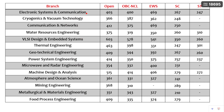Other branches are also available: Electronic Systems and Communications, Cryogenics and Vacuum Technology, Communication and Networks, Water Resource Engineering. VLSI Design is one of the top branches — you can see the cutoff is 603 for Open category, 578 for OBC Non-Creamy Layer, EWS 541, HC 350, HD 260.